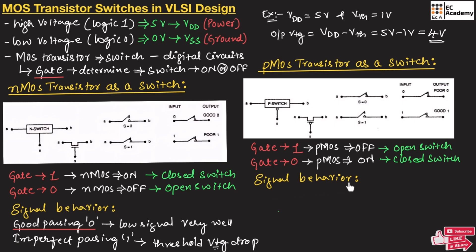Let us understand the signal behavior of the PMOS transistor. When the gate terminal is applied with logic 0, the PMOS turns on. Once the PMOS is on and if the input is 0, the output will be degraded — we get a poor output of 0. Degradation occurs due to threshold voltage. When the PMOS is on and logic 1 is applied, the PMOS can easily pass the signal and we get a good output of logic 1.